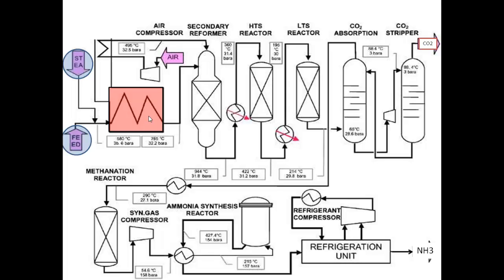After the hydrocarbon components have been reformed in the primary reformer, the process gas stream entering the secondary reformer still contains around 13% methane that will be further reformed in the secondary reformer. This 13% methane hasn't actually been reformed in the primary reforming section.